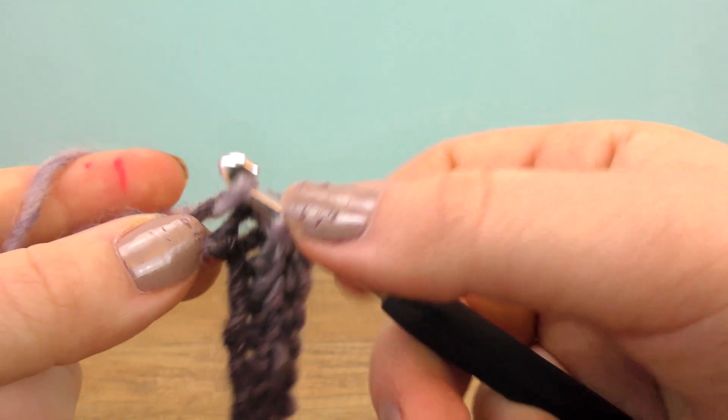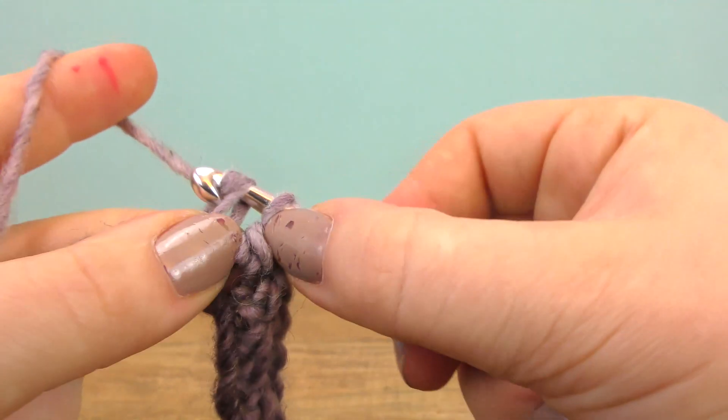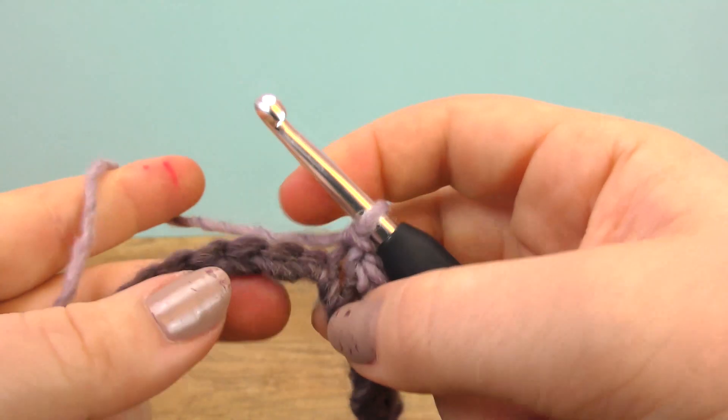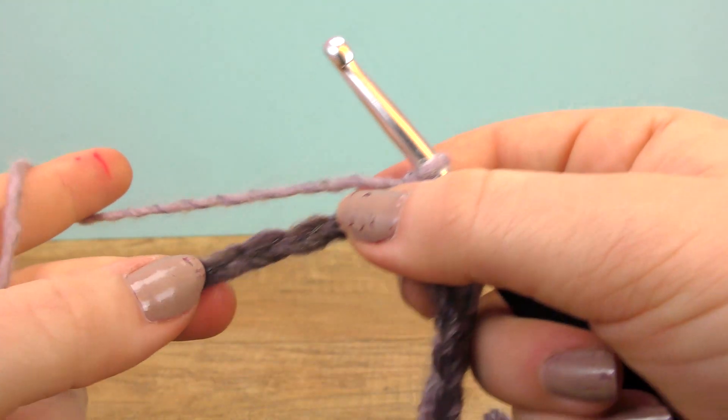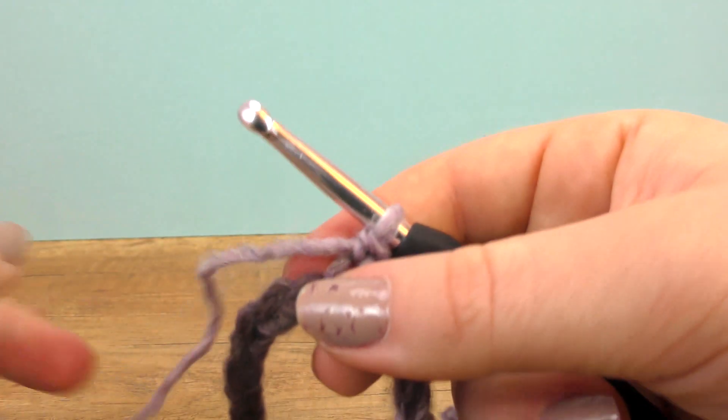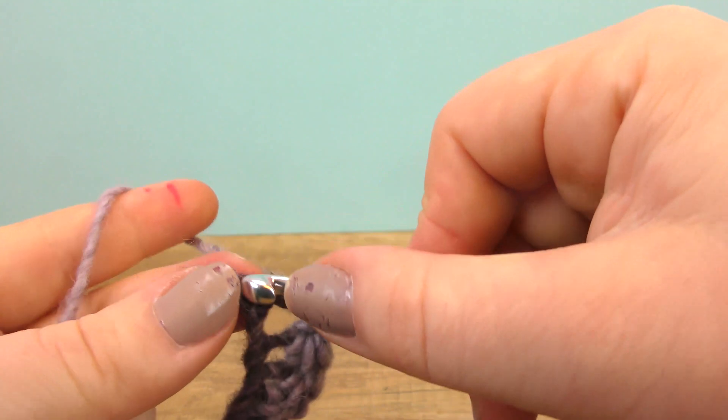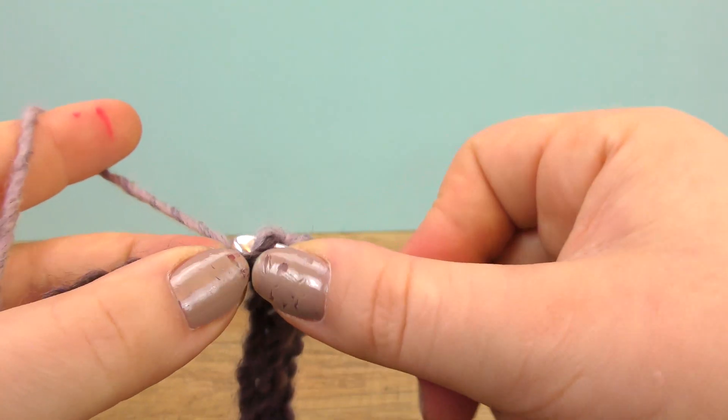The following one we do a single, so no yarn over this time. Next six stitches get slip stitches, so go through the chain and pull the thread directly through.